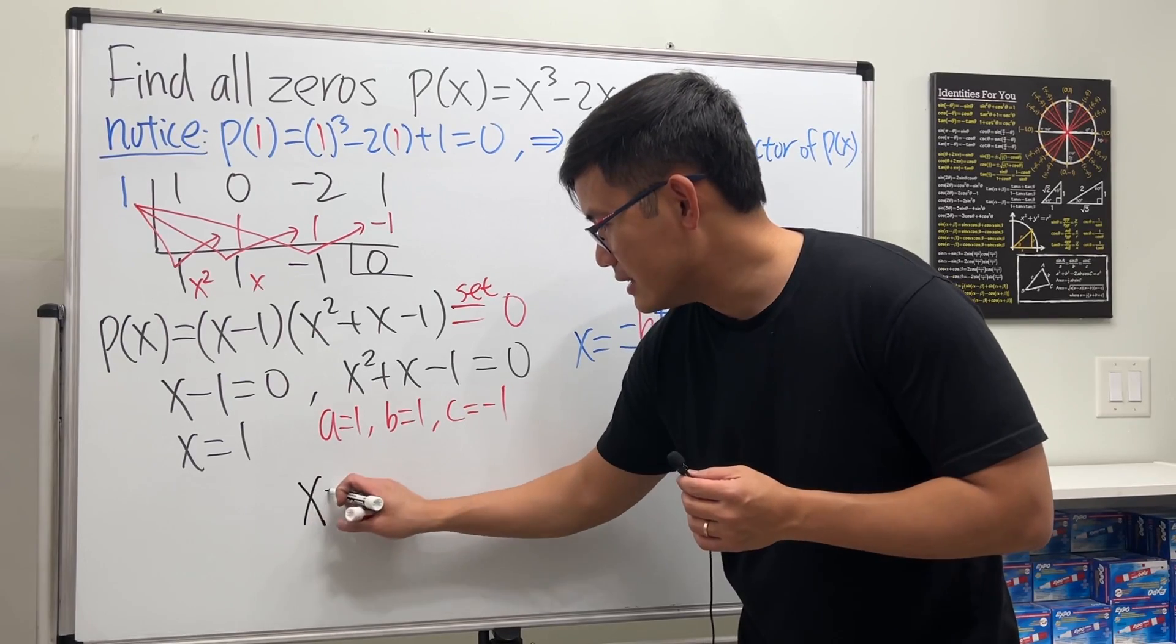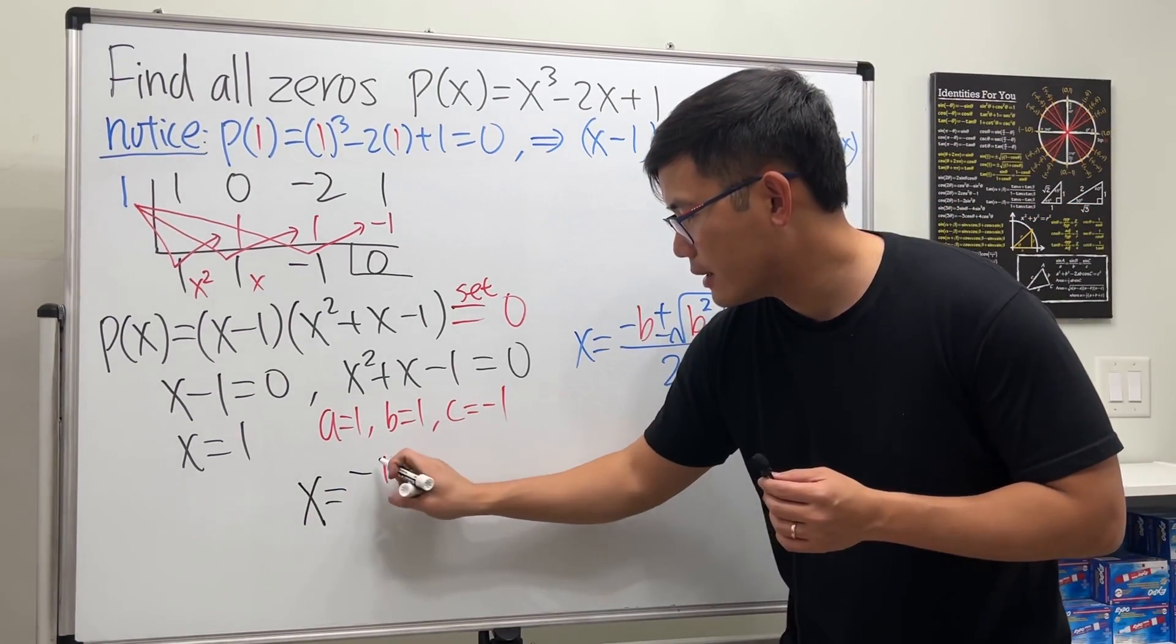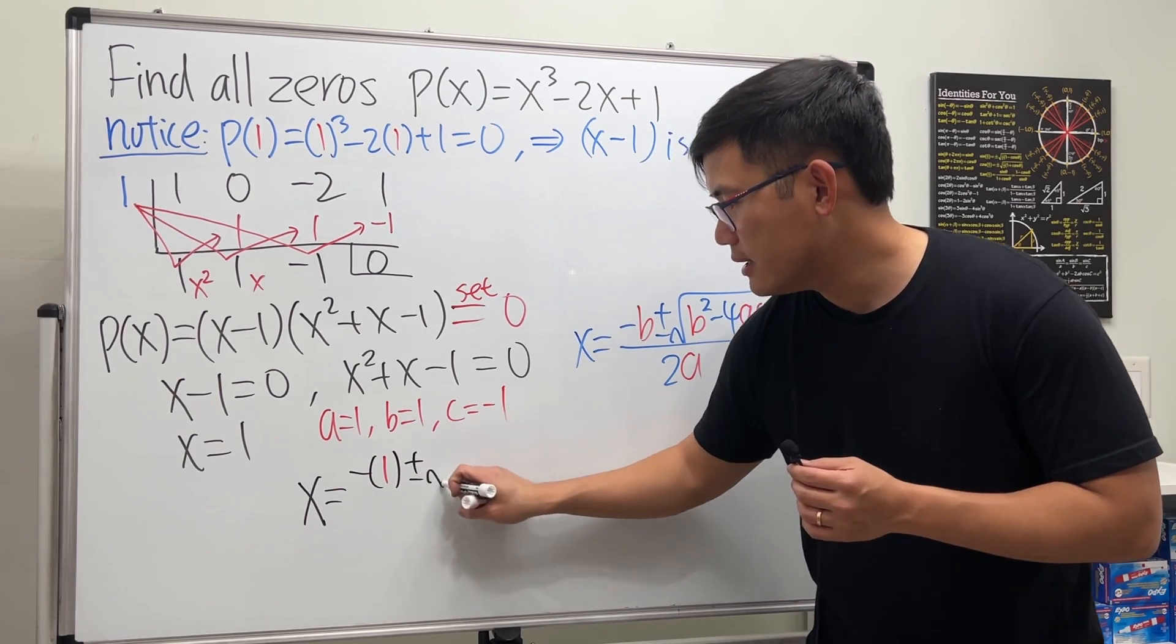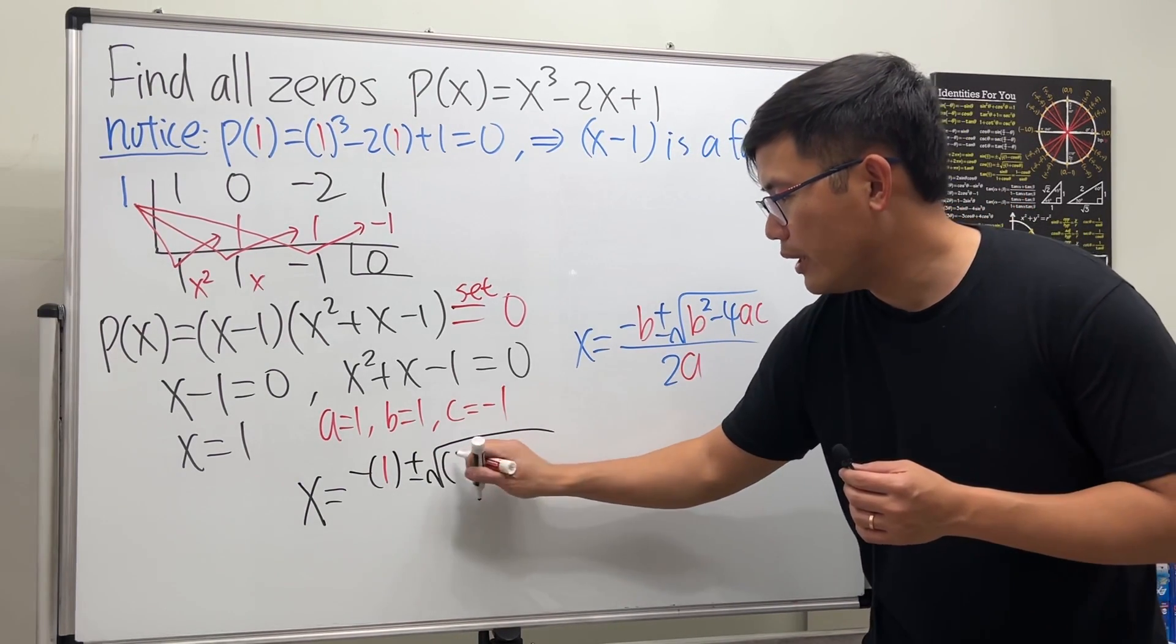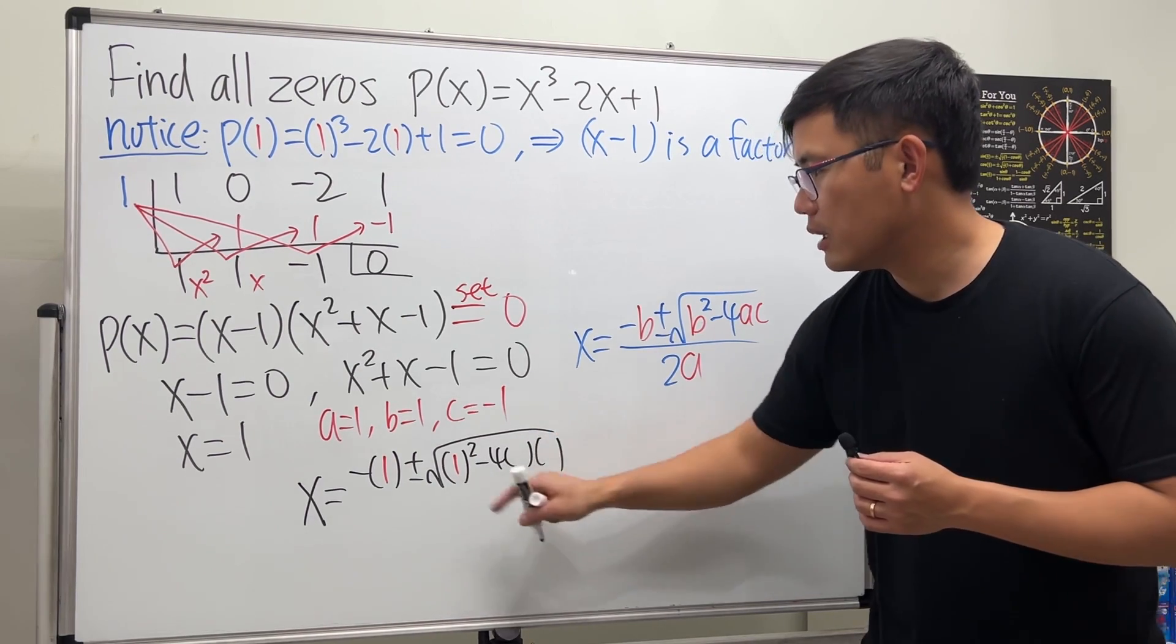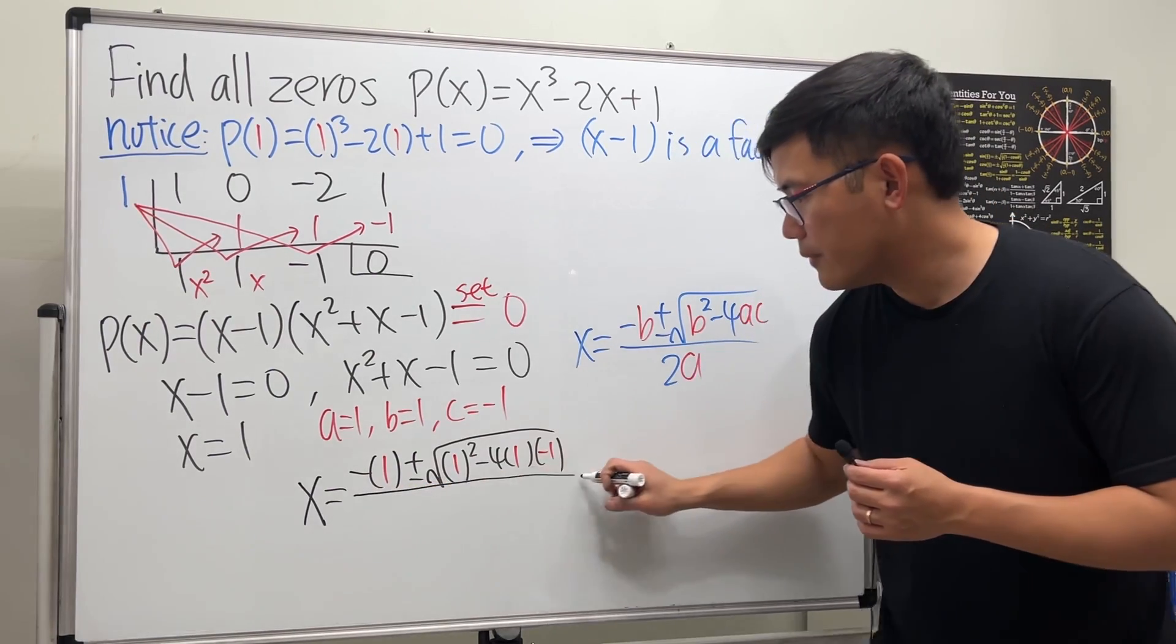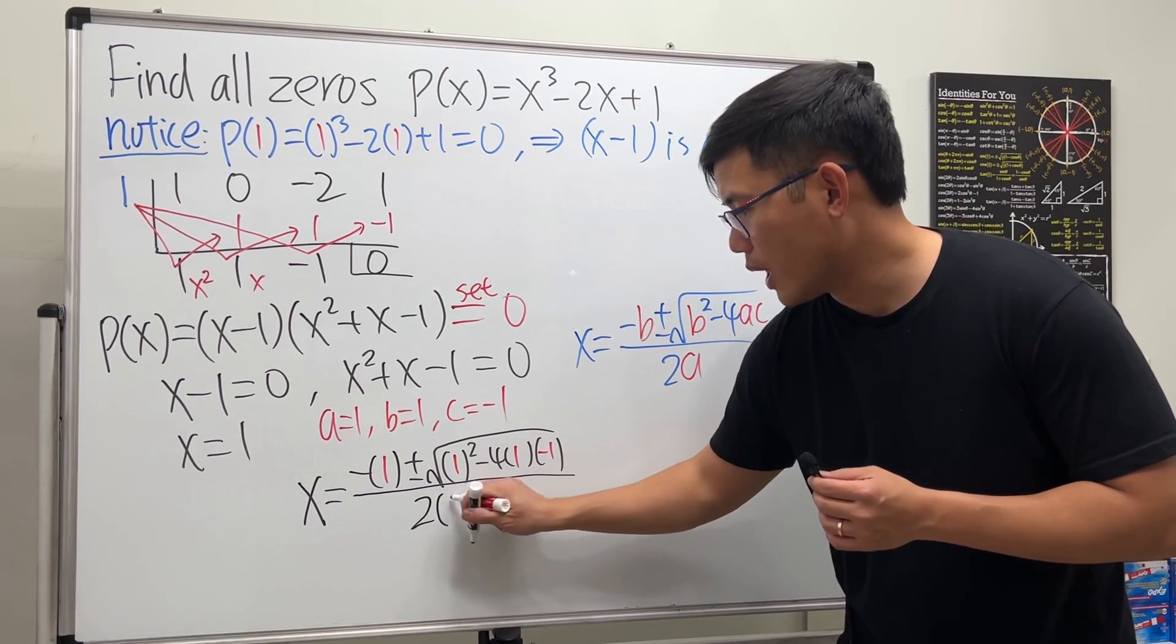Here we go: x is equal to negative b, which is negative one, plus or minus square root of b squared, which is one squared, and then minus 4ac - a is one, c is negative one - all over two times one.